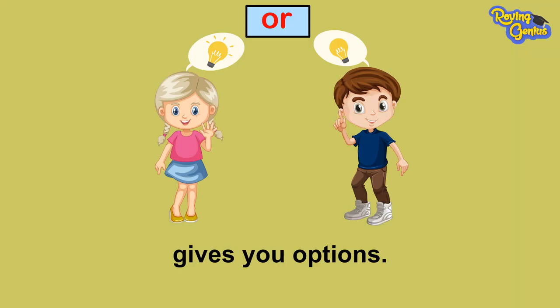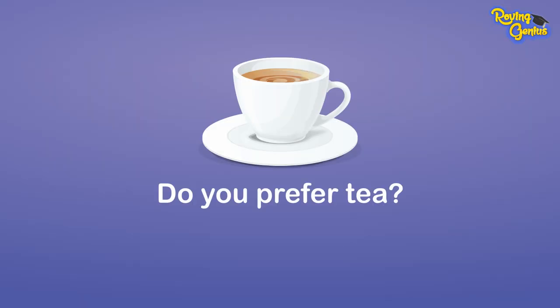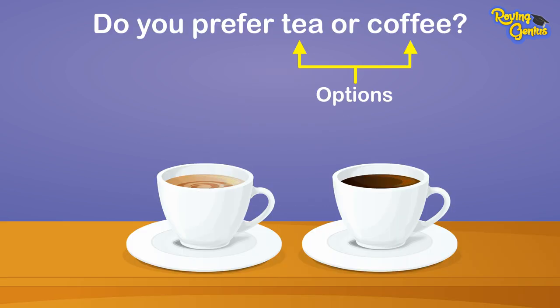OR gives you options. For example, Do you prefer tea? Do you prefer coffee? Do you prefer tea or coffee?